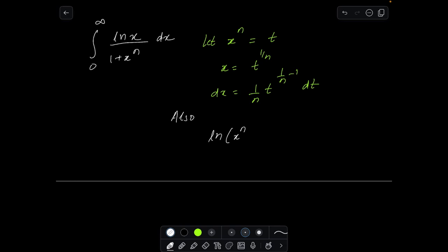Also we can take log on both sides of this expression so that we end up getting log x also in terms of log t—ln t—so this will become n ln x is equal to ln t, so our ln x can be now substituted with 1 by n ln of t.